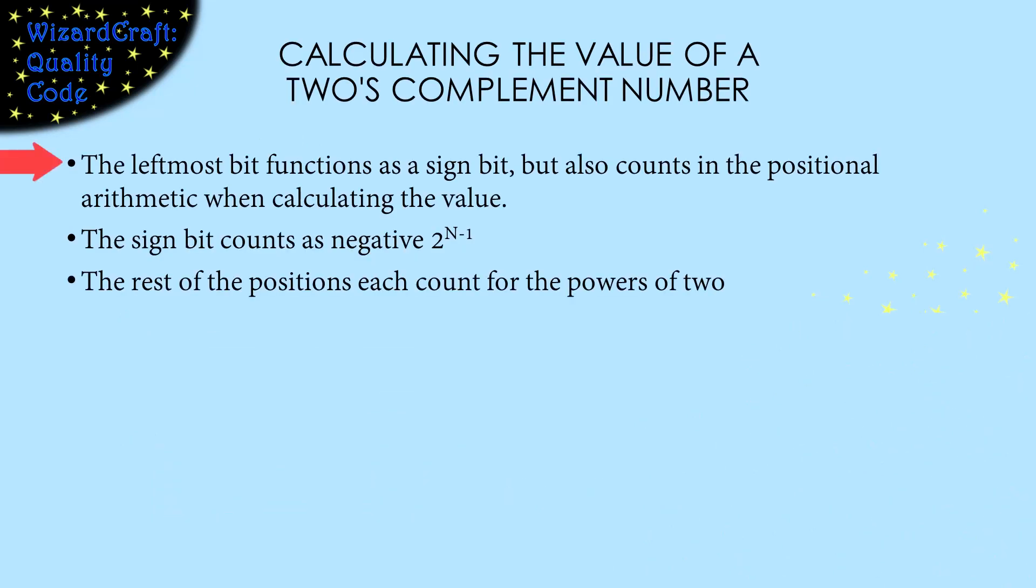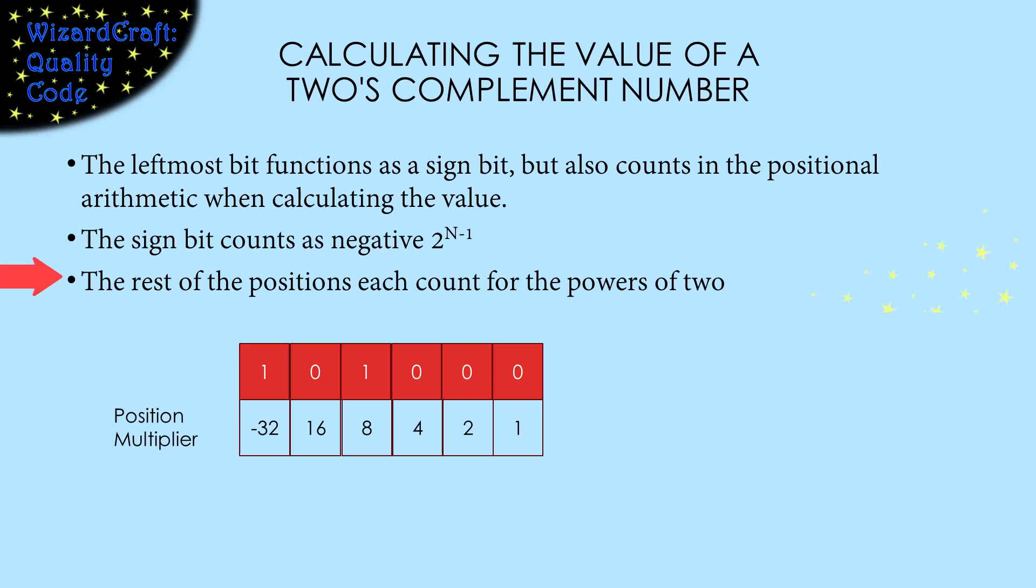In two's complement, the leftmost bit does work as a sign bit. But, it also gives us a trick for calculating the value of a number. In one's complement, when the sign bit was negative, we had to flip all the bits and find the positive magnitude to figure out what number we were holding. In two's complement, we can almost use normal conversion of binary to decimal. We just make the sign bit be the negative value of its normal multiplier. For example, in the 6-bit numbers we've been playing with, the positions count as 1, 2, 4, 8, and 16 like normal binary, but the leftmost position counts as negative 32.